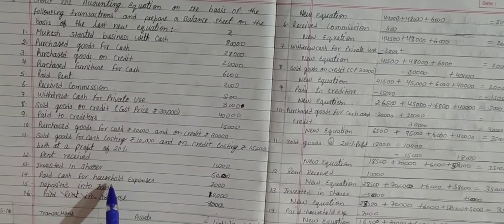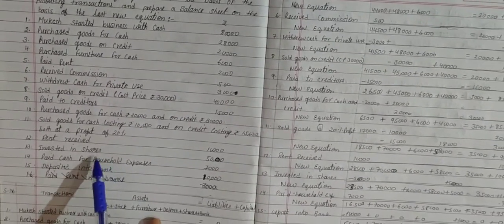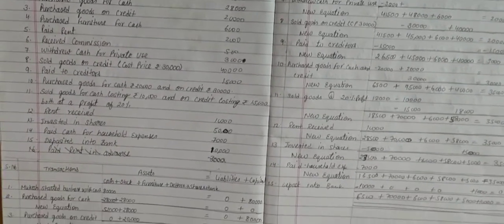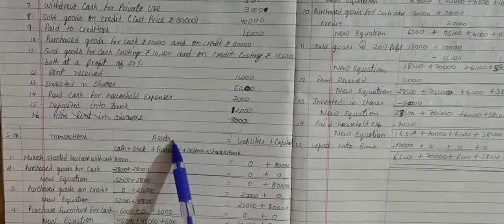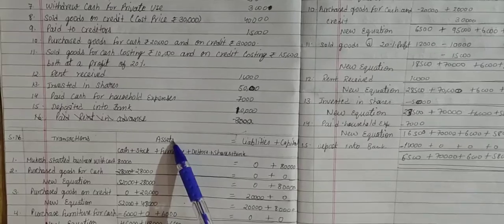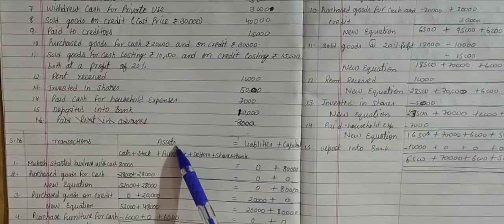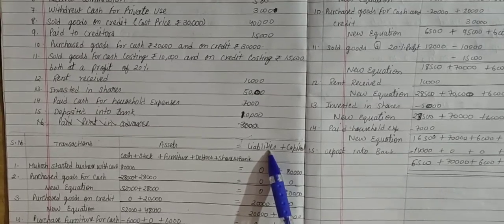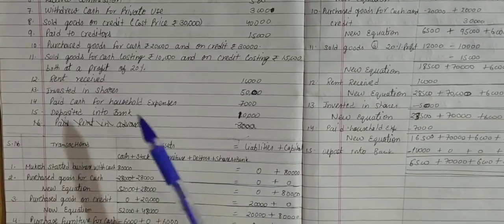Now one by one we are going to discuss all the points — how they deal with the accounting equation. The format of accounting equation has: serial number, transactions, and then Assets = Liabilities + Capital. We already discussed the elements included in assets and liabilities, so now we consider the question.